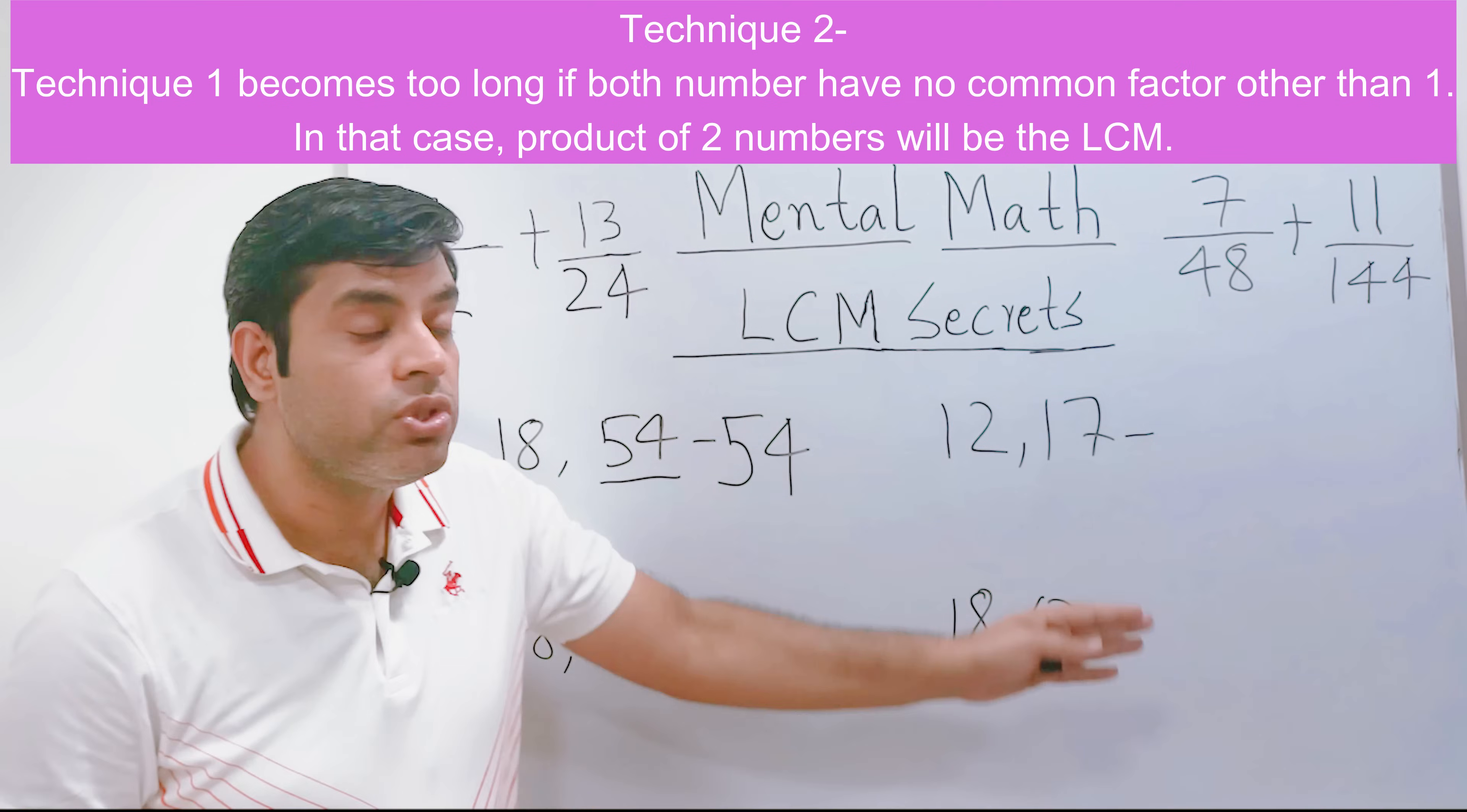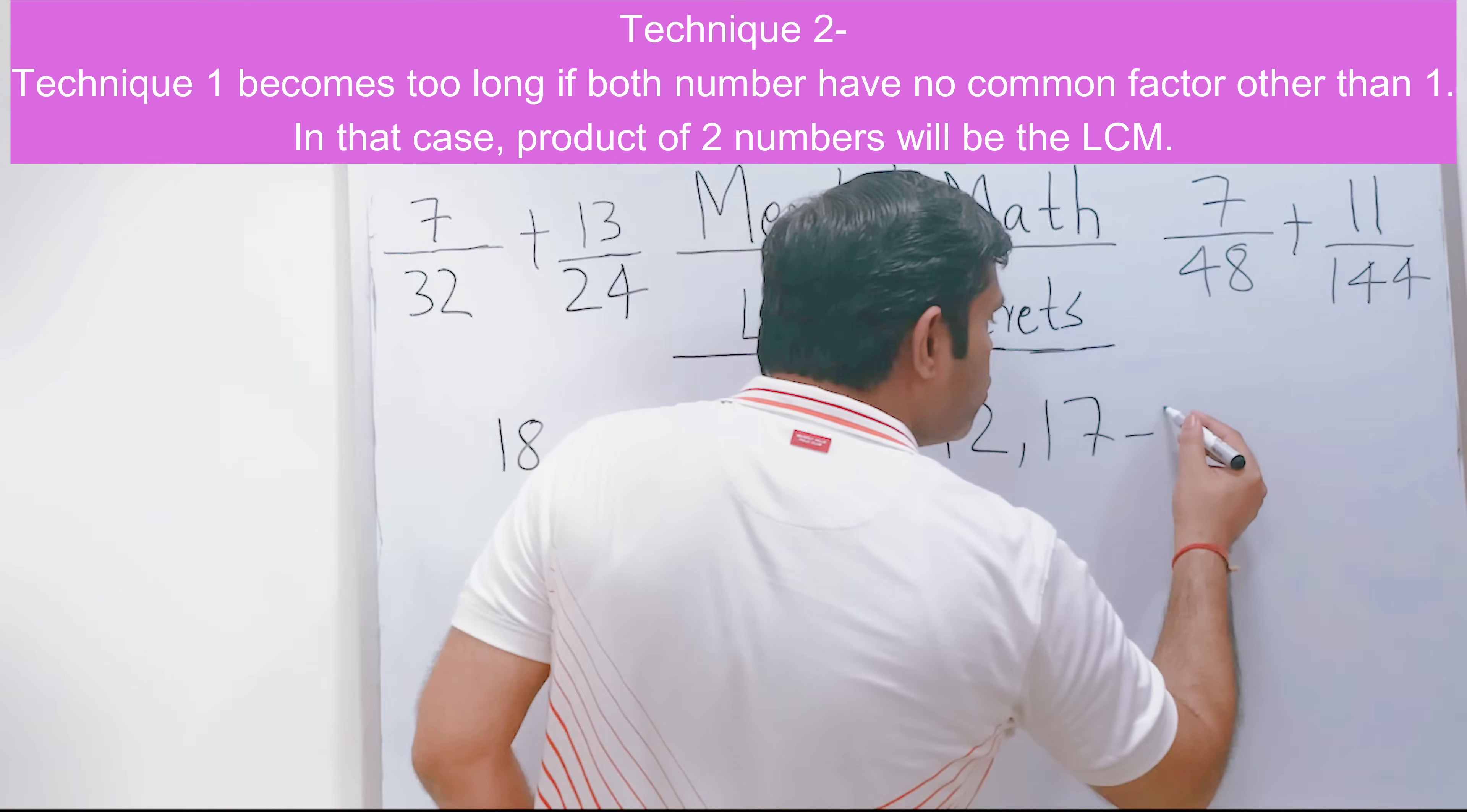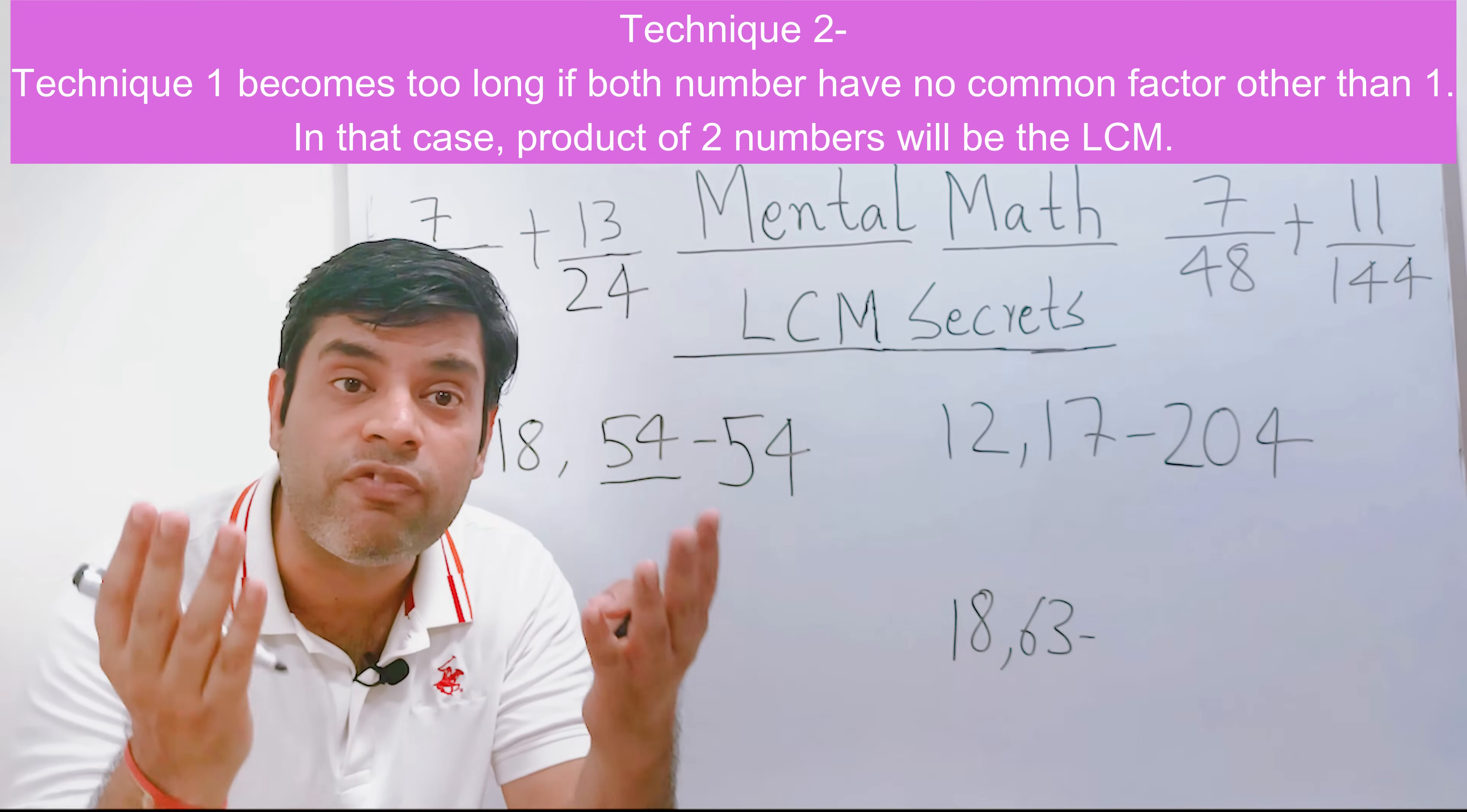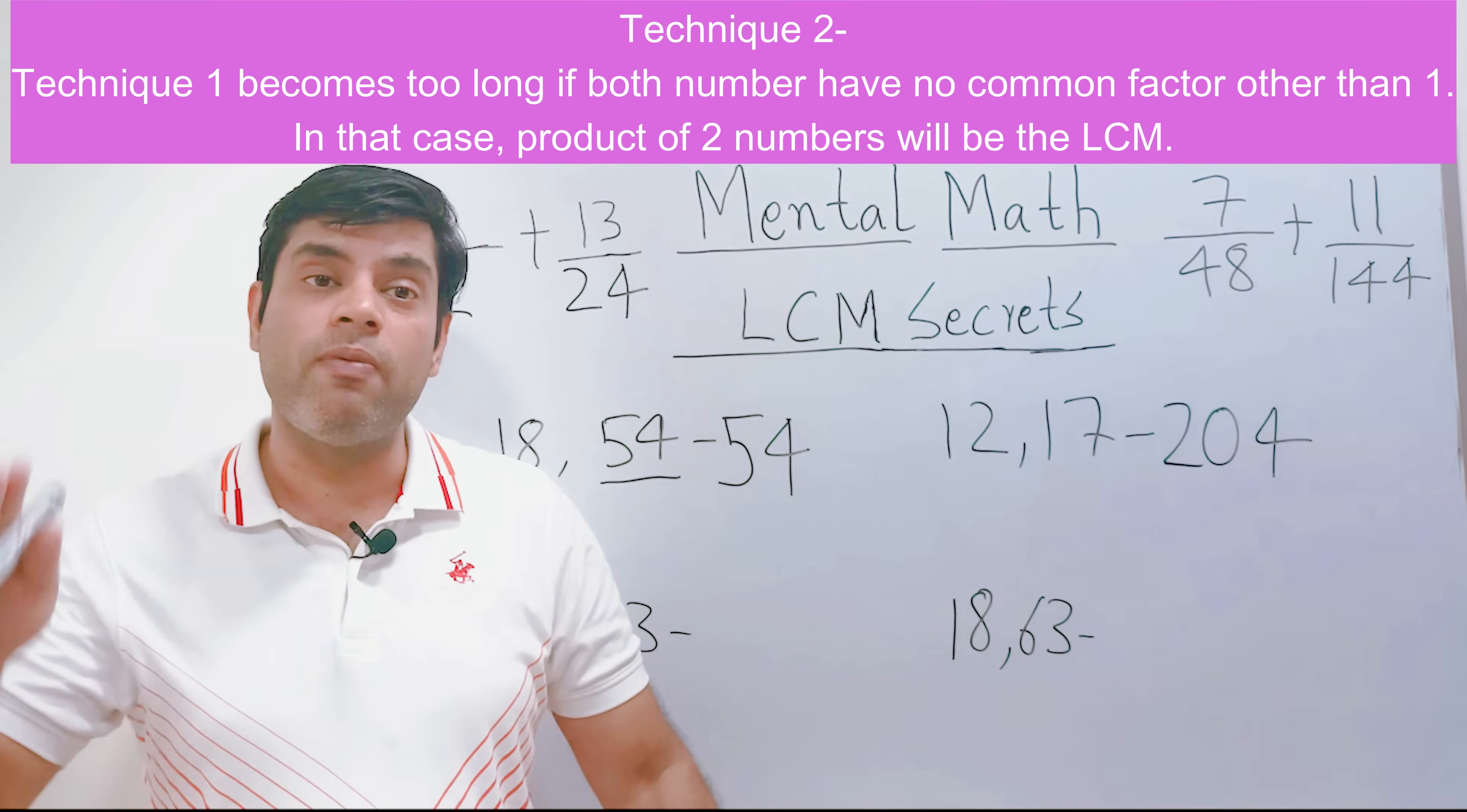Of course none in this case, and normally it happens when you have two prime numbers or sometimes different cases like 4 and 9. Although both are not prime, there is still no common factor. So you can use this technique: multiply the two numbers. For example, this one is 204.